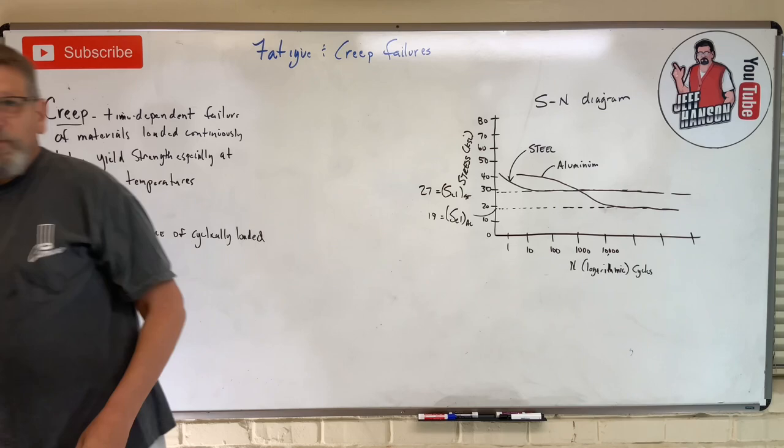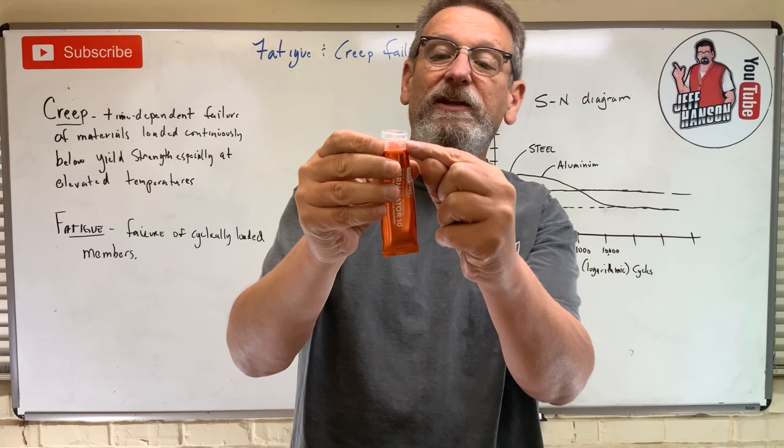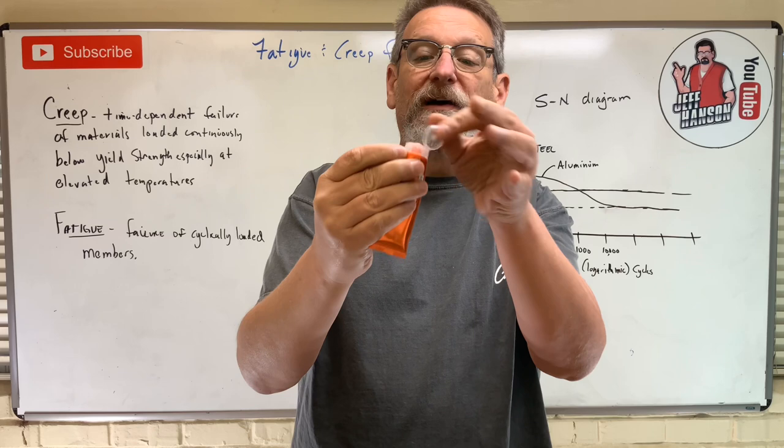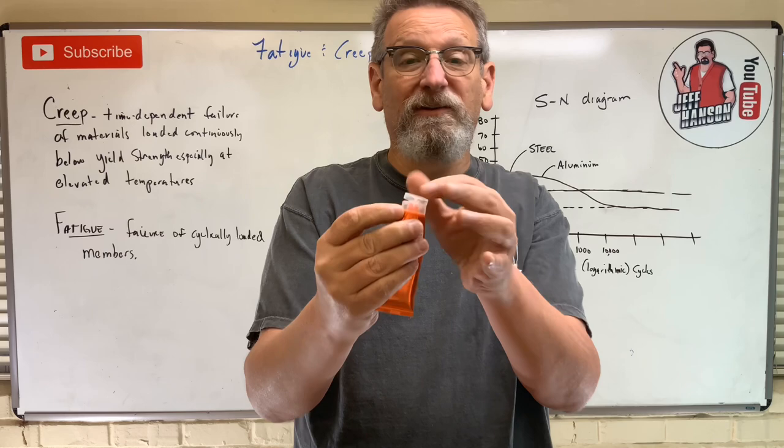Then we have other plastic materials like this little cream bottle here, which has what's called a living hinge — a little plastic connected hinge right here. I can fold that back and forth for hundreds and thousands of cycles and it will not fail. It's designed to do that. It's called a living hinge. It might fail after a long, long time.